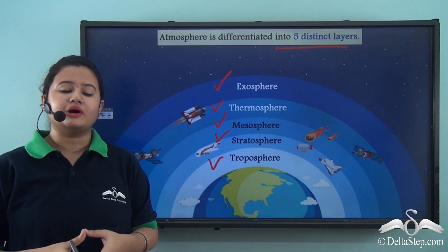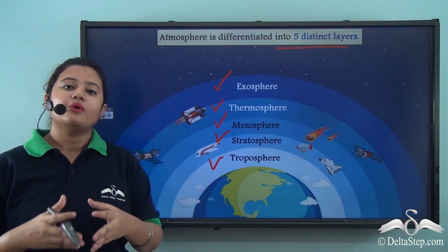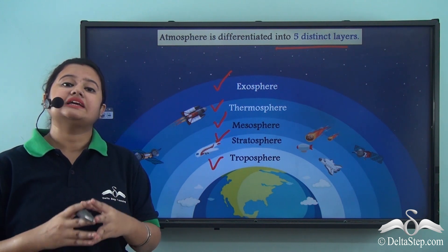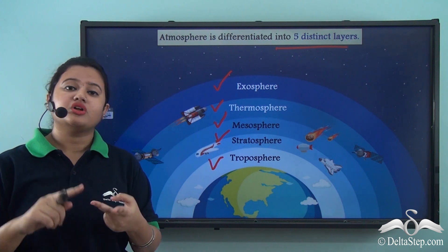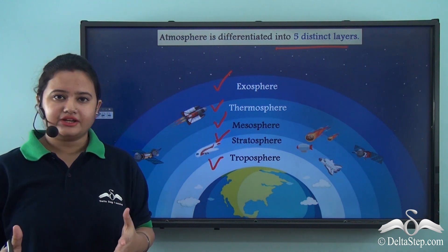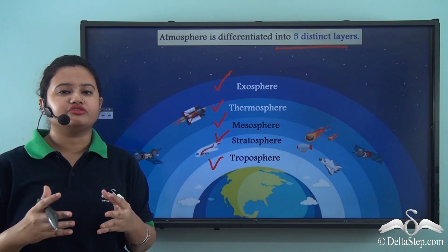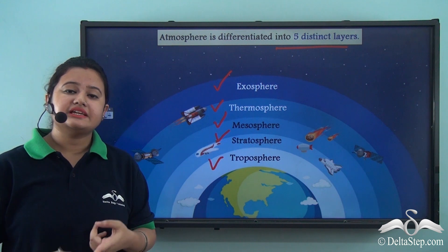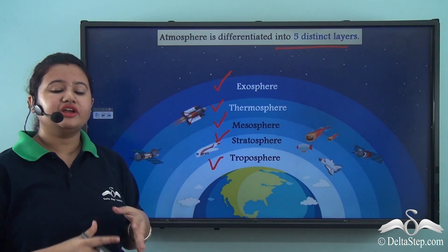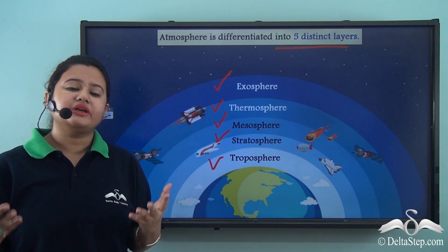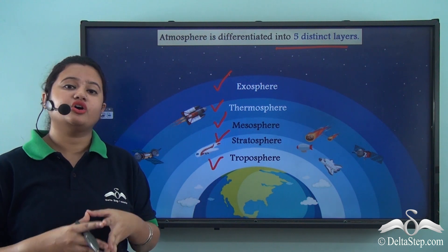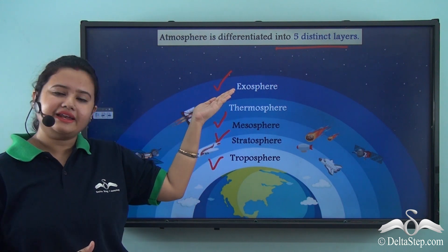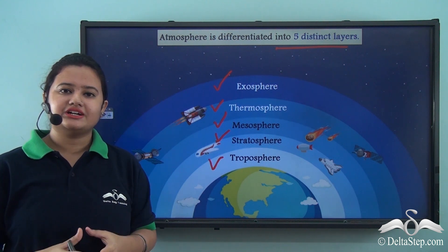In today's lesson we discussed about an important layer of the Earth — the atmosphere. We understood that atmosphere is an invisible blanket of air that surrounds our planet Earth, composed of several vital gases like nitrogen, oxygen, carbon dioxide and water vapour. We discussed the utilities of each of these gases and understood that density, temperature and air pressure decrease in the atmosphere with increase in altitude. Based on these characteristics, the atmosphere has been differentiated into five important layers: troposphere, stratosphere, mesosphere, thermosphere and exosphere.